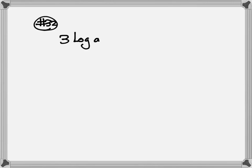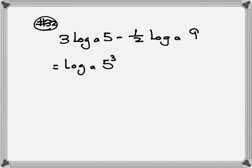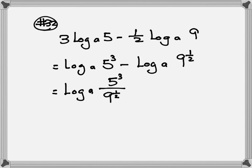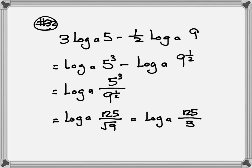Number 32: we have 3 log base a of 5 minus one-half log base a of 9. We want to change the number in front of log to become the exponent. Keep log base a: it becomes log base a of 5 to the third power minus log base a of 9 to the one-half. Then change from subtraction to division: log base a of 5 cubed over 9 to the one-half. Five cubed is 125, and 9 to the one-half is the square root of 9, which is 3. So the answer is log base a of 125 over 3.